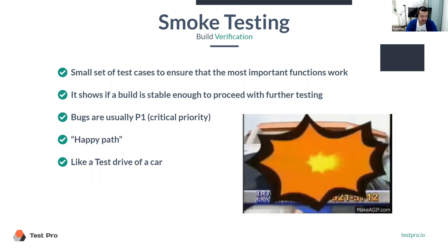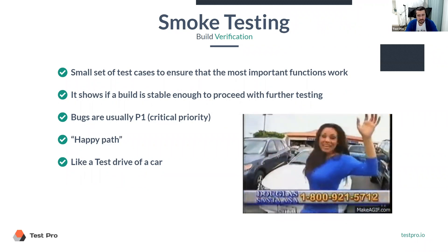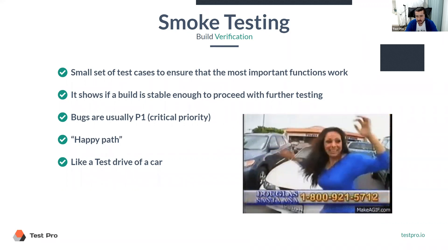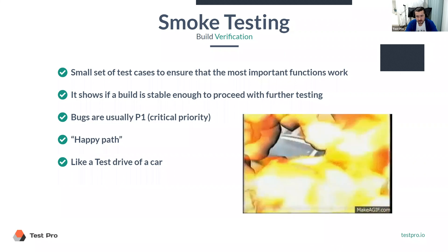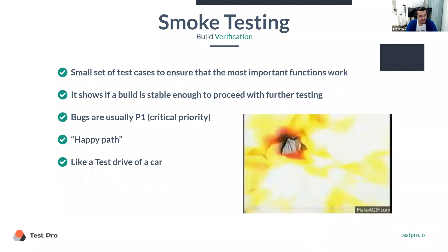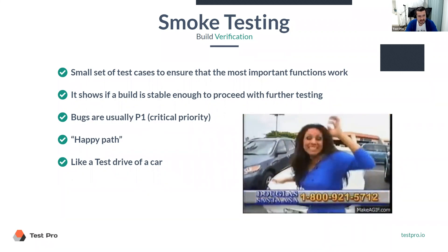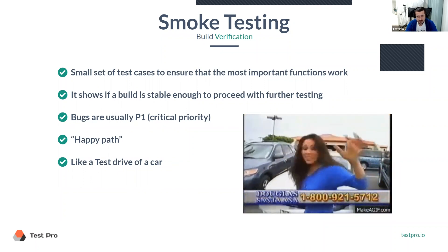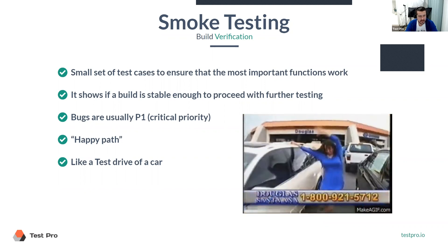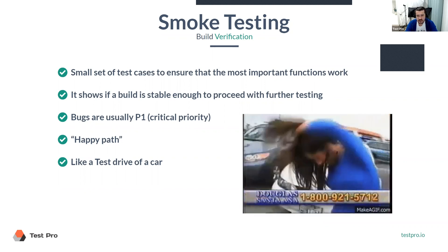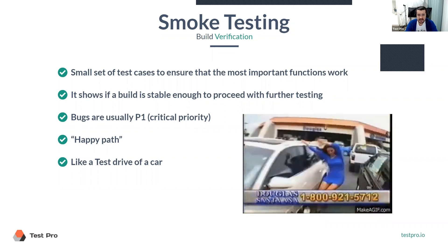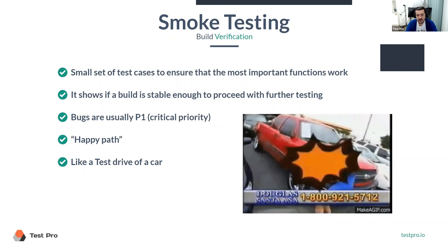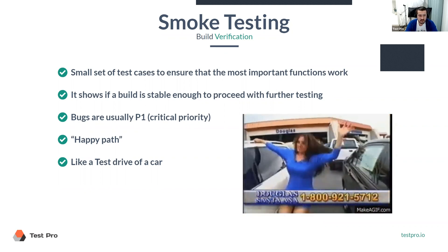I like to use the analogy of a test drive of a car — as opposed to, say, a 200-point inspection, which would be regression testing, which we'll cover later in future classes. Regression is very detailed testing, going one by one through a lot of items. Smoke testing is more like a test drive.